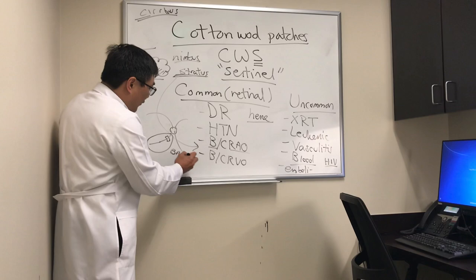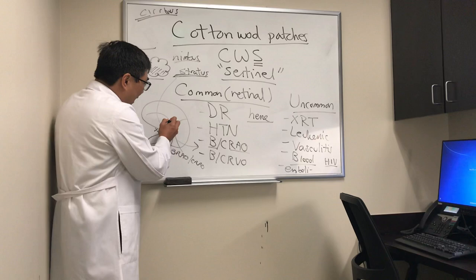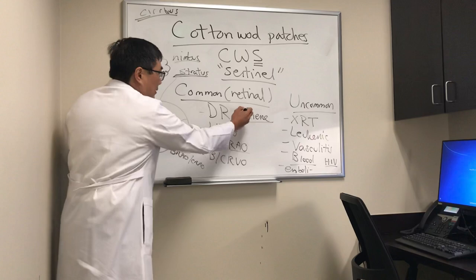If we have a cherry red spot and the cumulus appearance covers the entire fundus — opaque and white — that's central retinal artery occlusion. At the border zone between the ischemic and non-ischemic area, that ischemic penumbra can produce the cotton wool patch.